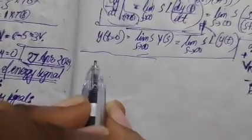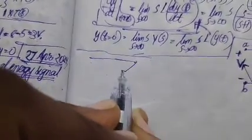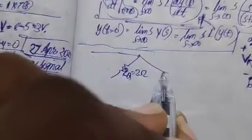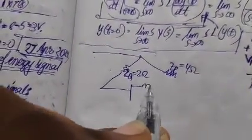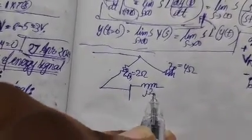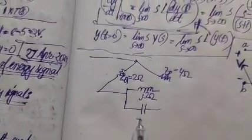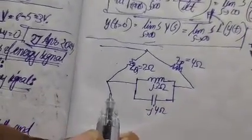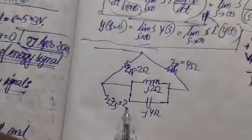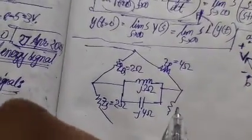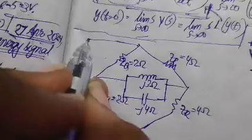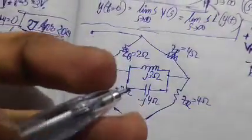Now coming to the balanced bridge example. We have a network with ZQ equals 2 ohm, ZB equal to 4 ohm, J3 ohm, a capacitor of minus J4 ohm, ZS equal to 2 ohm, and ZR equal to 4 ohm. We need to predict whether this is a balanced bridge or not.